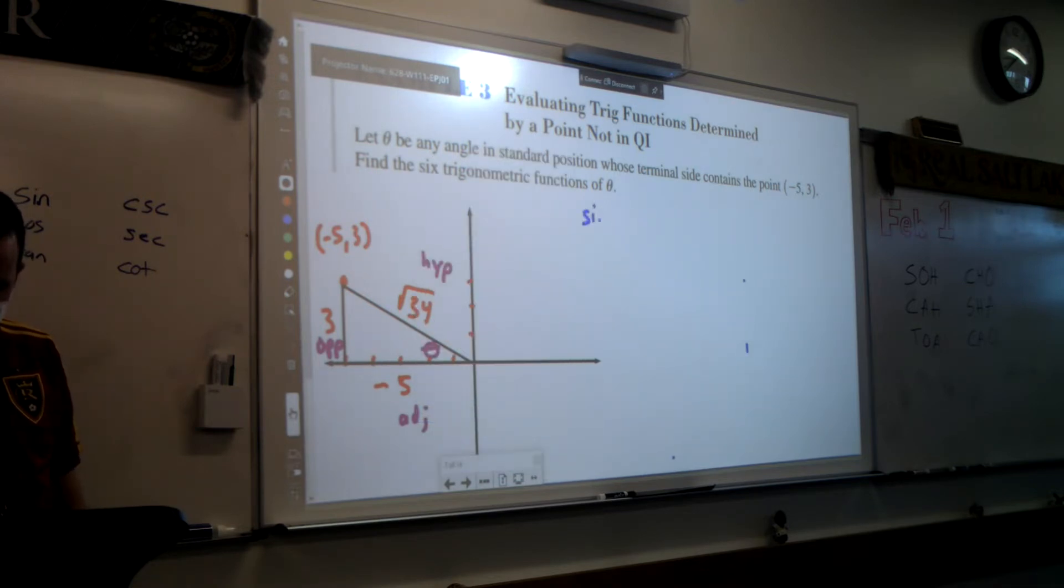If I were going to do sine, sine is opposite over hypotenuse. That's 3 over the square root of 34. Was that the same as last time? Check your notes. Yes, it was. Okay, cool.